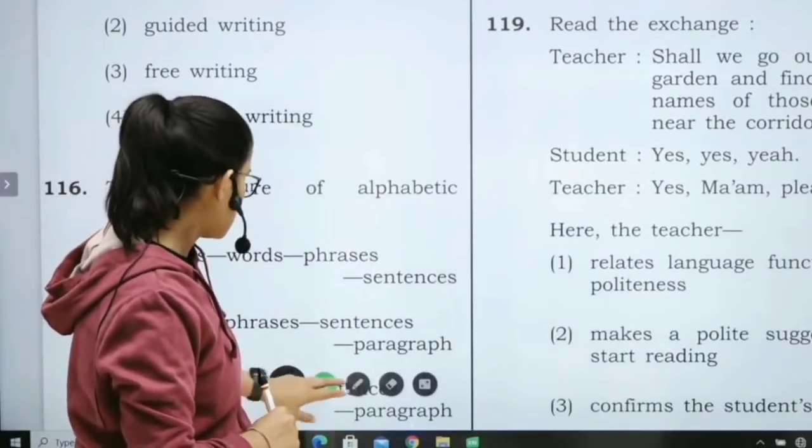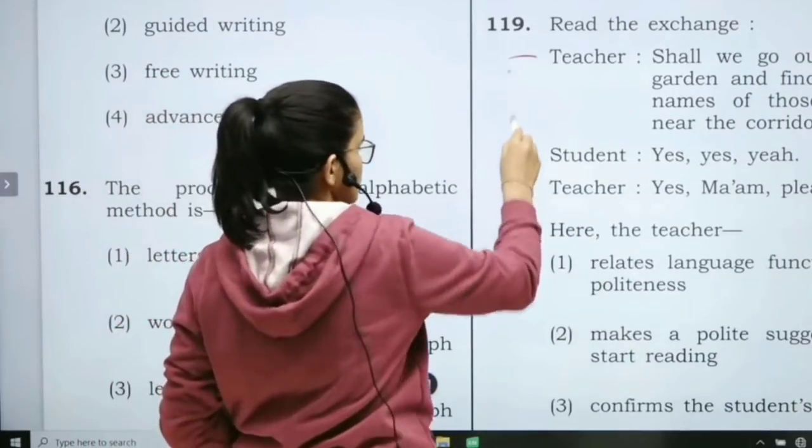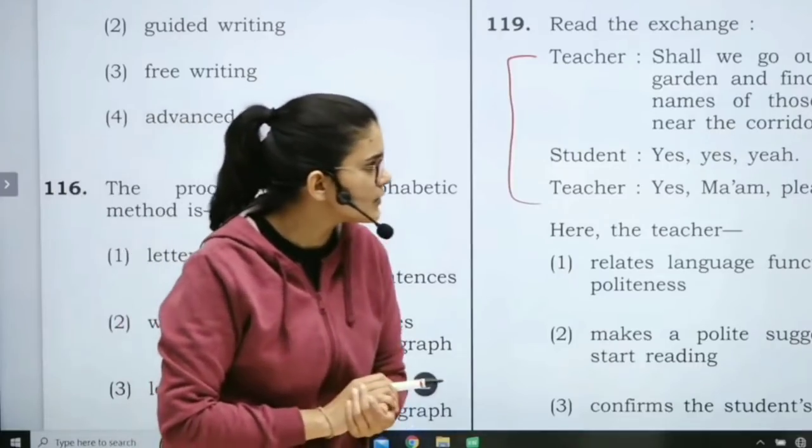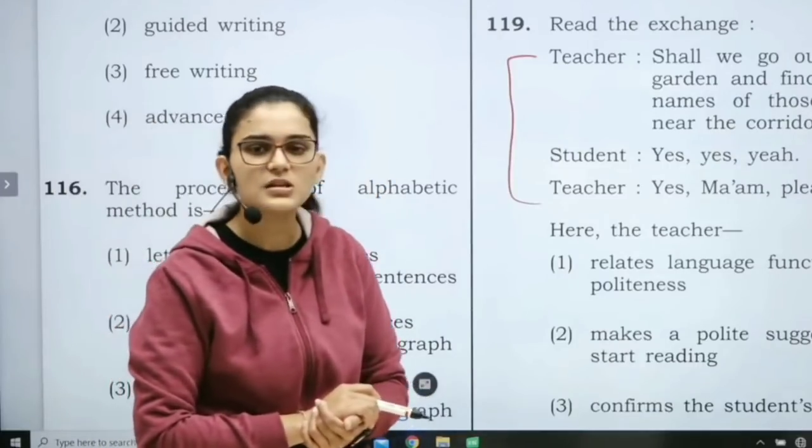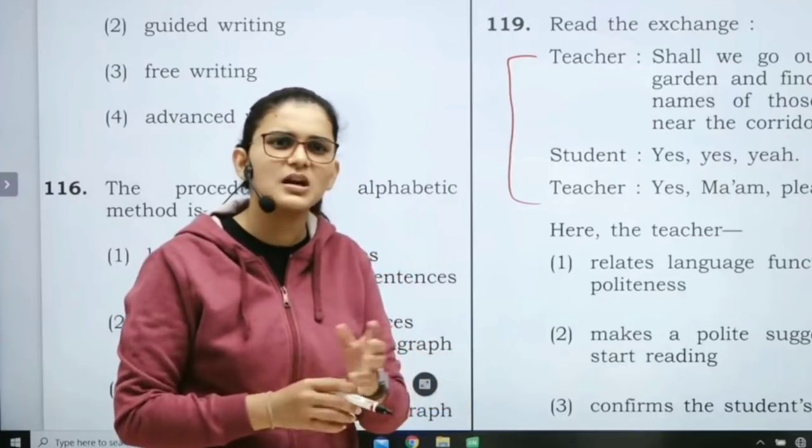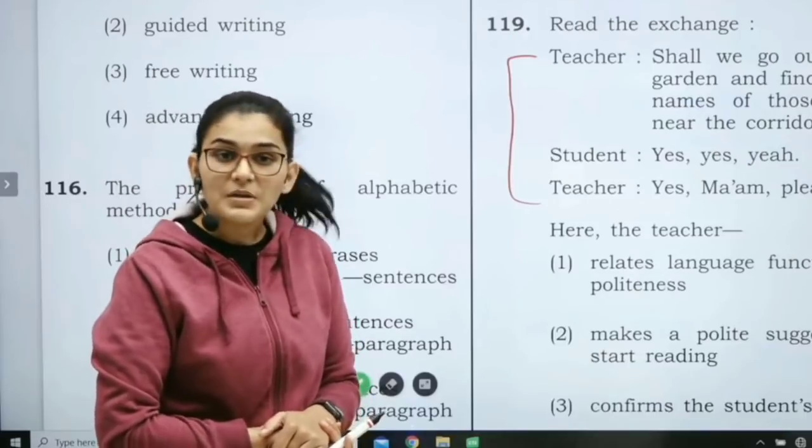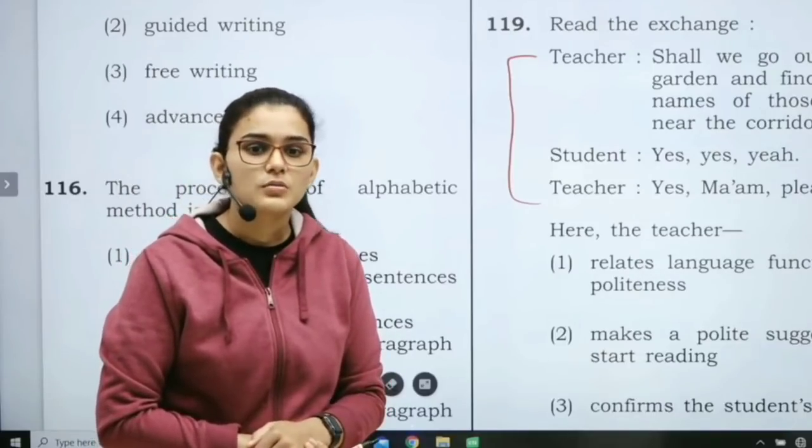Read the exchange. There is an exchange written in a dialogue between the teacher and student. Teacher has said, 'Shall we go out to the garden and find out the names of those flowers near the corridor?' We need to go to a garden and see what the names of the flowers are there in the corridor.